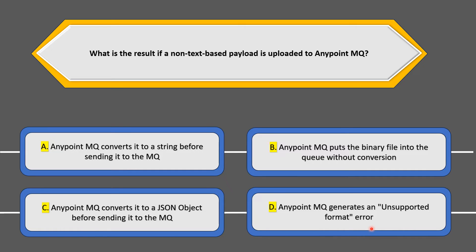Out of these four options, let's identify which ones can be discarded straight away. First, let's discuss Option C, which says AnyPoint MQ converts it into a JSON object before sending it to MQ. If the payload were CSV or XML, we could convert it to JSON, but since the payload is non-text-based, there is no way of converting it to a JSON object. So we can discard Option C.